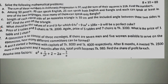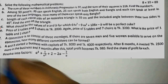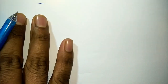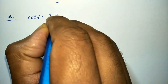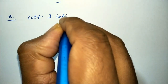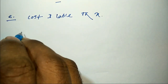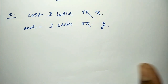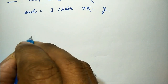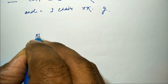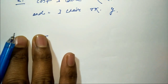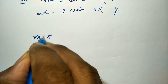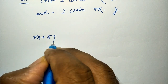Next question: the price of 3 tables and 5 chairs equals a certain amount. Again, the price of 5 tables and 7 chairs gives another amount. What is the price of 1 table and 1 chair? Let cost of 1 table be Taka X and cost of 1 chair be Taka Y. First condition: 3X plus 5Y equals total cost. Second condition: 5X plus 7Y equals total cost.